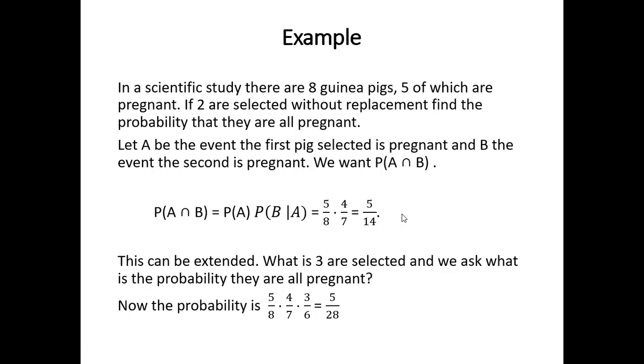We could easily extend this idea. Let's say we now wanted to select 3 pigs and we ask the question, what's the probability they're all pregnant? Now the probability is obtained by multiplying the fractions 5 eighths, 4 sevenths, and 3 sixths. After a little bit of canceling and then multiplying this out, our final answer is 5 over 28.